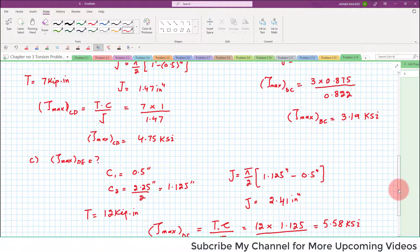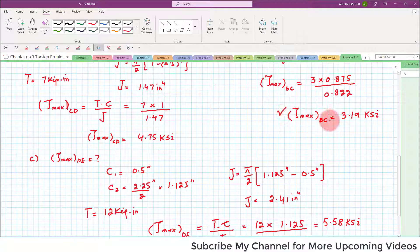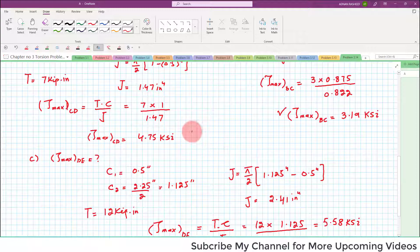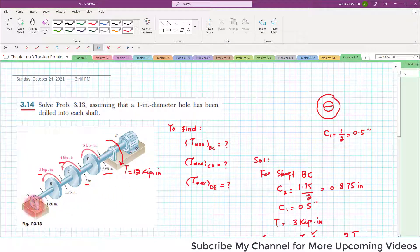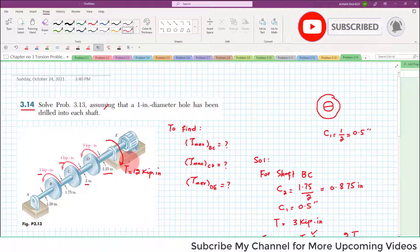So we have found out the maximum shearing stress in shaft BC which is 3.19 ksi, maximum shearing stress in shaft CD which is 4.75 ksi, and maximum shearing stress in shaft DE which is 5.58 for this problem if this whole shaft is drilled through 1 inch diameter hole and then we have solved this problem and find out the shearing stress in each shaft BC, CD and DE.